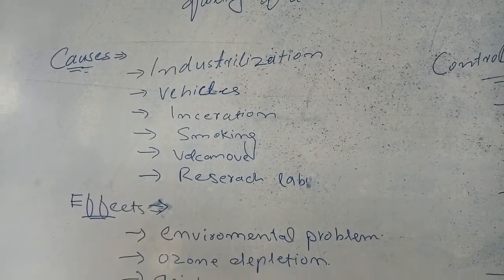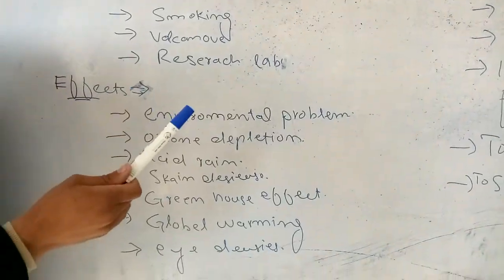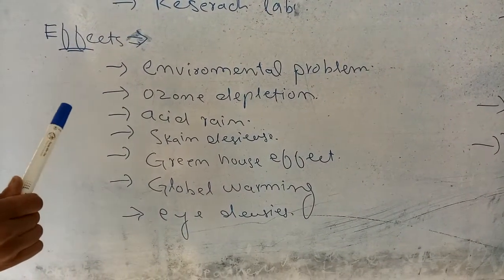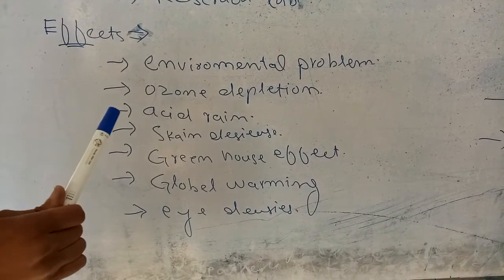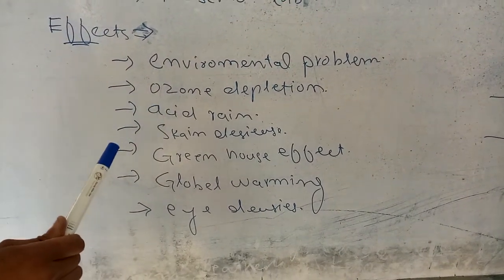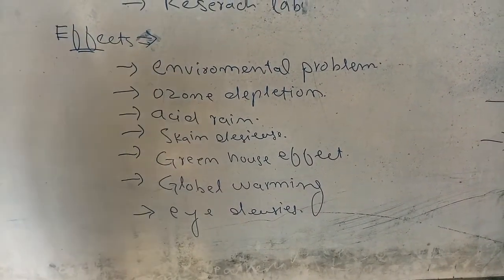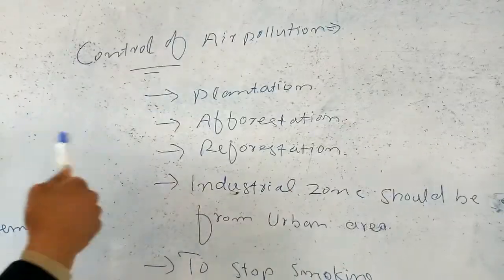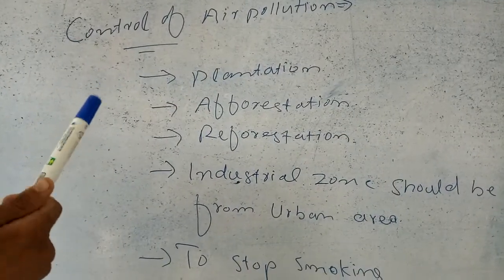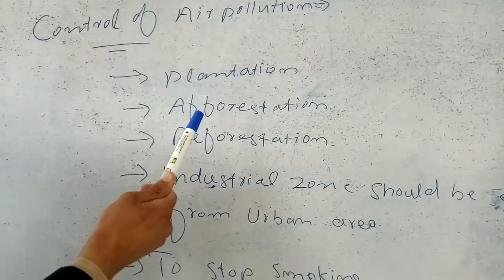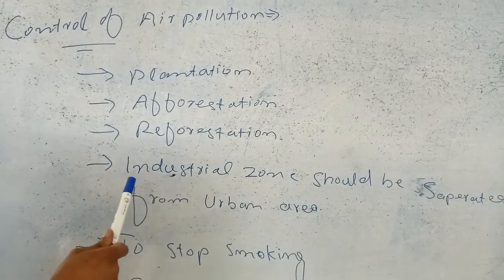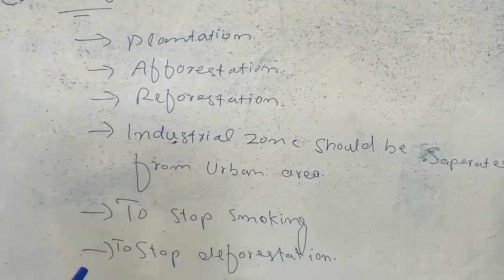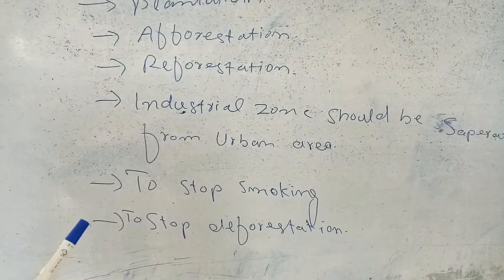Air pollution affects many environmental problems. How to control air pollution? Through afforestation, reforestation, industrial zones should be separated from urban areas, stopping smoking, and stopping deforestation. Thank you.